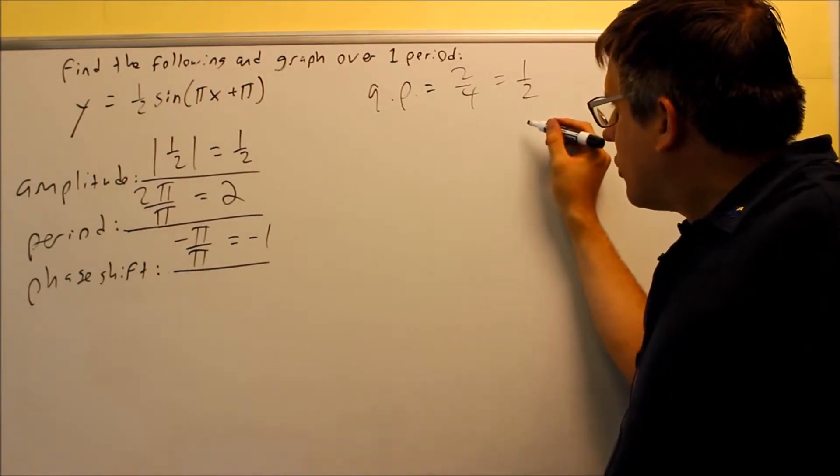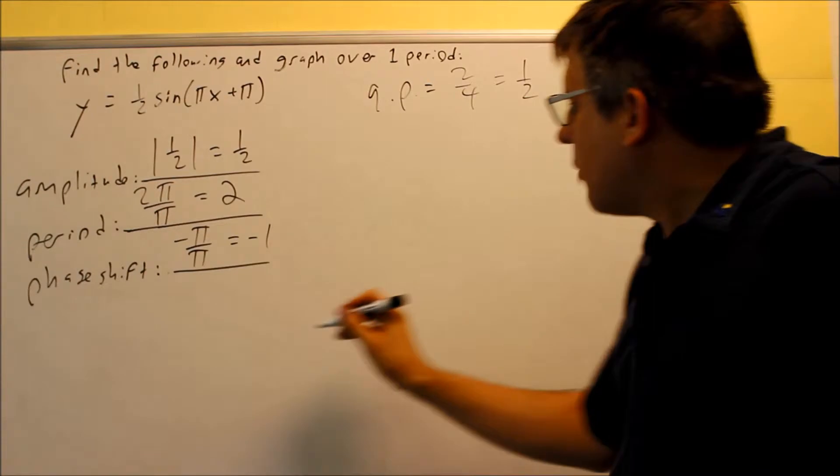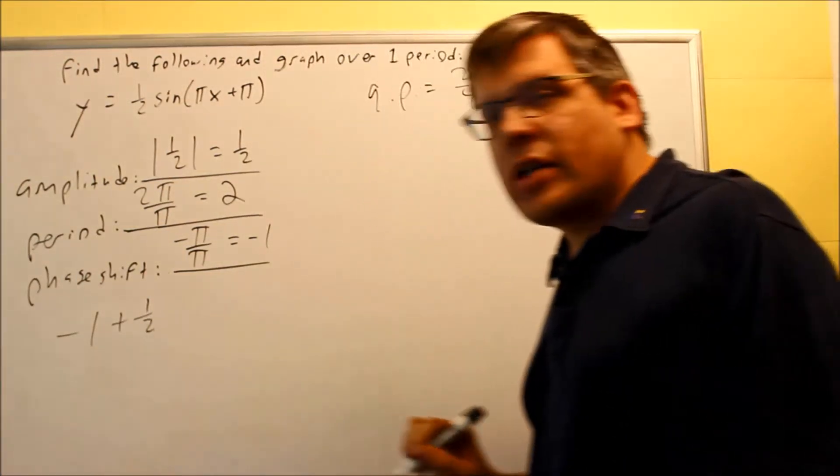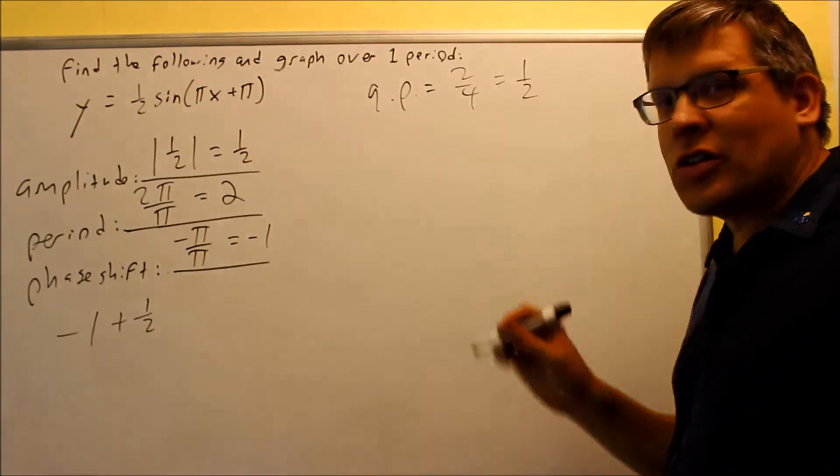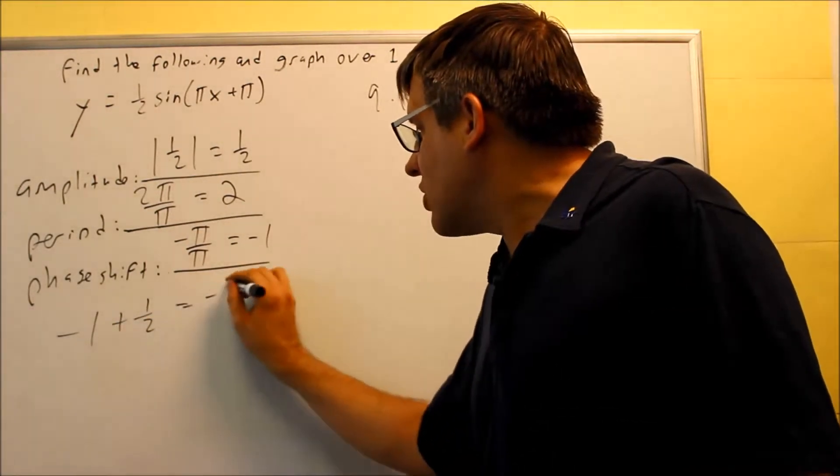So what I'm going to do is I'm going to first start, when I draw the graph out, my first key point is going to be negative 1. But then I have to add 1/2 to that, I'm adding my quarter point to find out what the next key point is. Negative 1 plus 1/2 is negative 1/2.